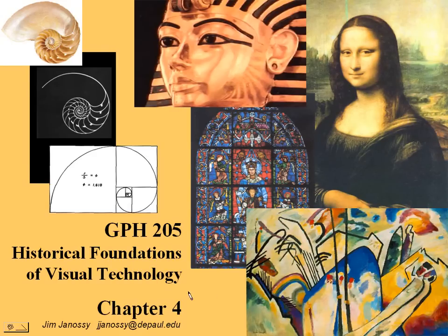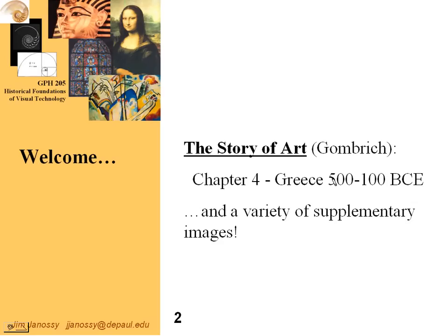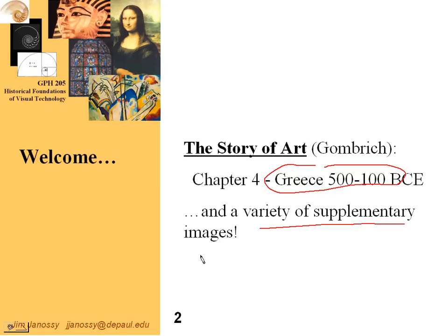Hi, this is Jim Janesey, and this is Chapter 4 of The Story of Art by Ernst Gombrich. These are the sound annotated lecture slides. In Chapter 4 we're going to be looking at Greece, late Grecian history, 500 BC to about 100 BC, and there are a lot of supplementary images that exist in this set of slides also.